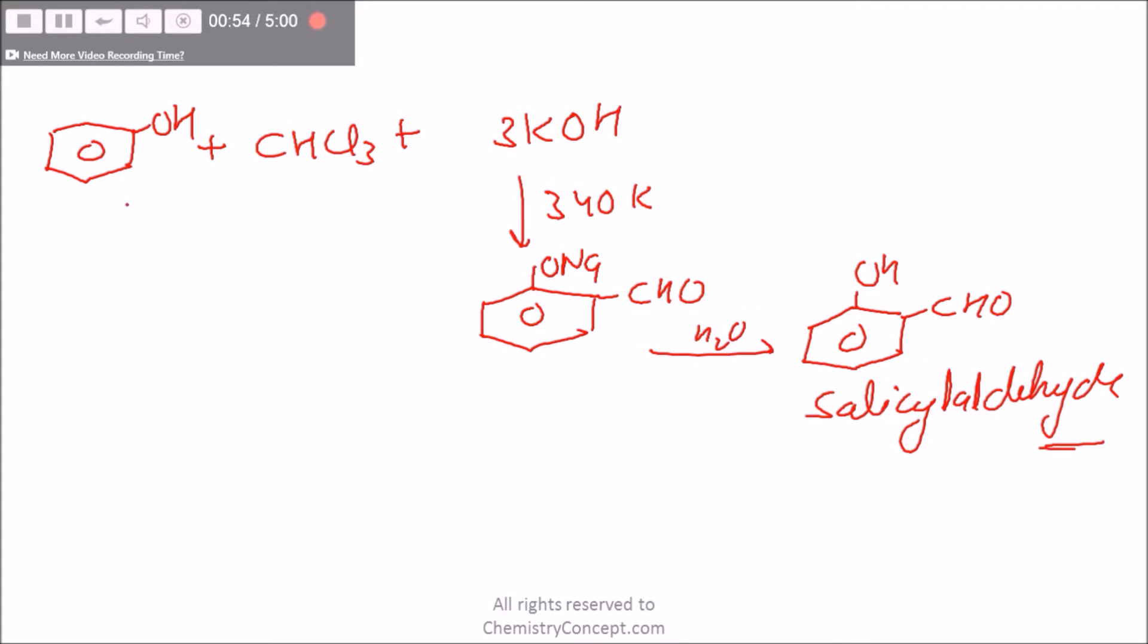Now, there's an interesting point: if I replace this chloroform with CCl4, carbon tetrachloride, the end product which I will be getting is salicylic acid. Yes, the salicylic acid which is used for the formation of very famous aspirin.